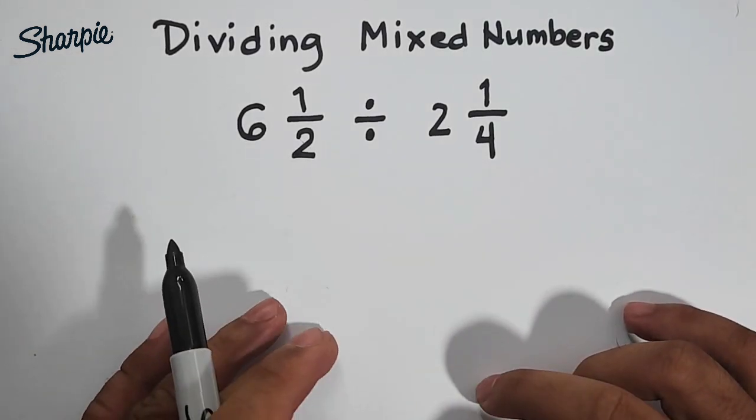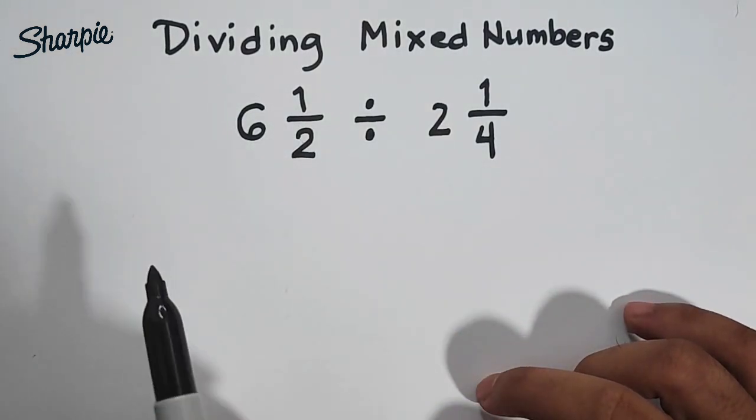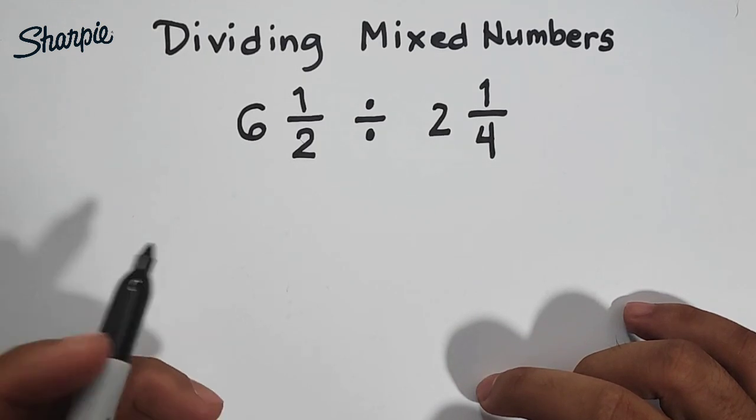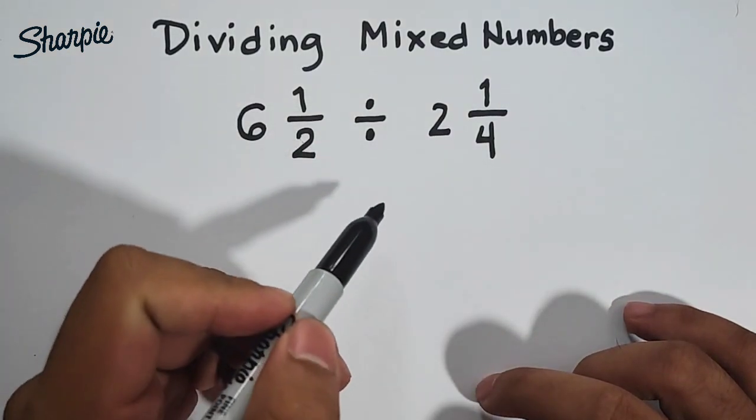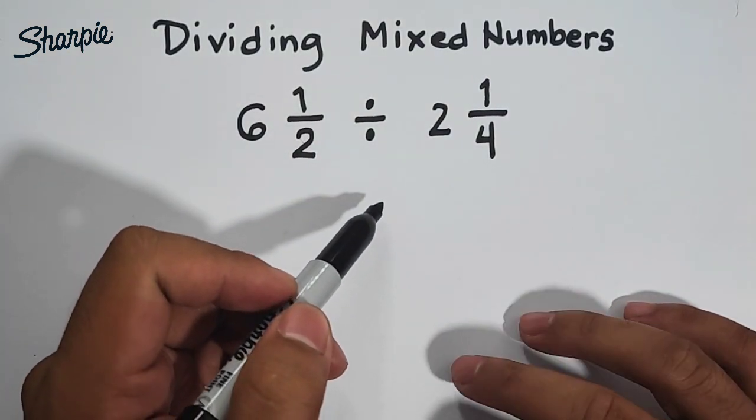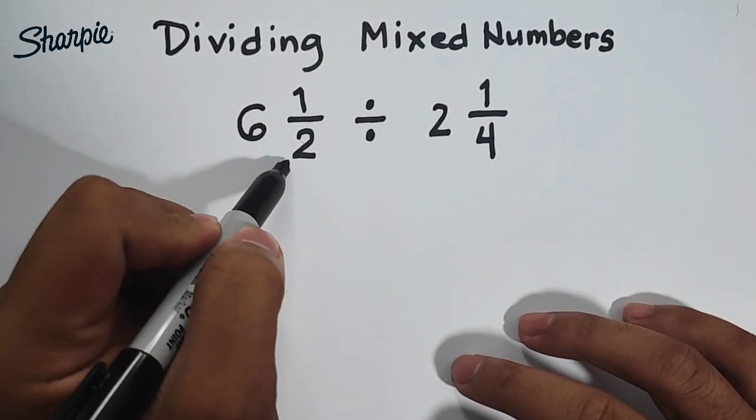So the question here is, how are we going to divide these two mixed numbers? The first step is to convert these mixed numbers into improper fractions. So let's convert this.